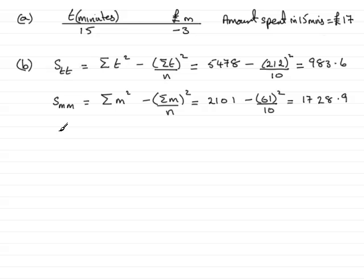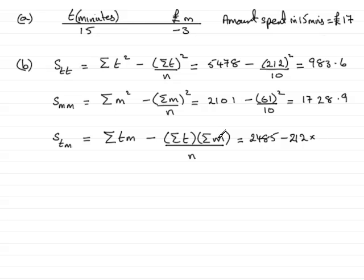Next, we have to work out STM, and this formula will be sigma TM minus sigma T multiplied by sigma M all over N. And if you do that one, you've got sigma TM, which is given in the summary statistics, so that is 2485. We've already worked out sigma T. It was 212, so that's minus 212, and that is being multiplied by sigma M, and that was 61. So we have 61, and that's all divided by 10. Work that out on your calculator, and what you get is 1191.8.